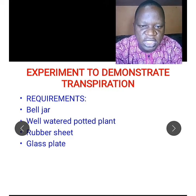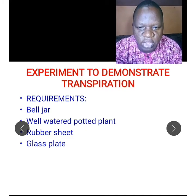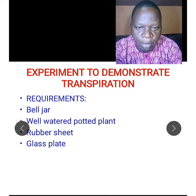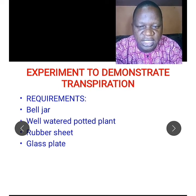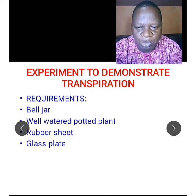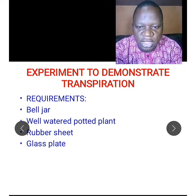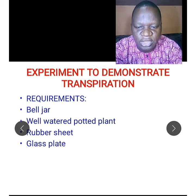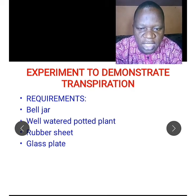Now let's look at an experiment to demonstrate transpiration. The materials required are: a bell jar, a well-watered potted plant — that is, a plant growing in a pot with soil that has been watered well — a rubber sheet, and glass plates.